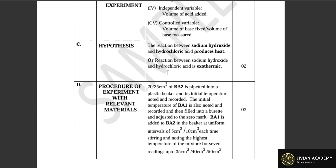The third variable is the control variable — those factors that are kept constant. In this case, we are looking at the volume of the base, which was fixed — that is, the volume of sodium hydroxide, which was measured and kept constant — and this becomes our control variable.